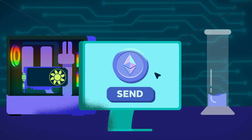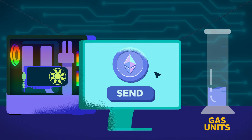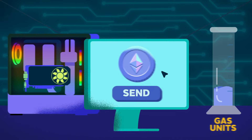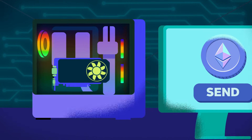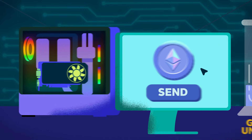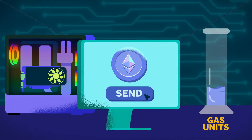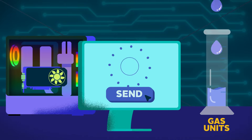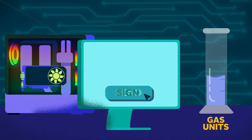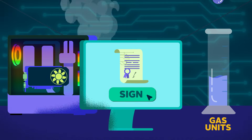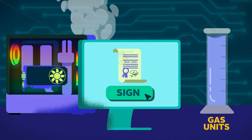Every operation on Ethereum consumes a certain number of gas units based on the computational effort required. Simple transactions like sending ETH might use around 21,000 gas units, while interacting with complex smart contracts can consume much more.